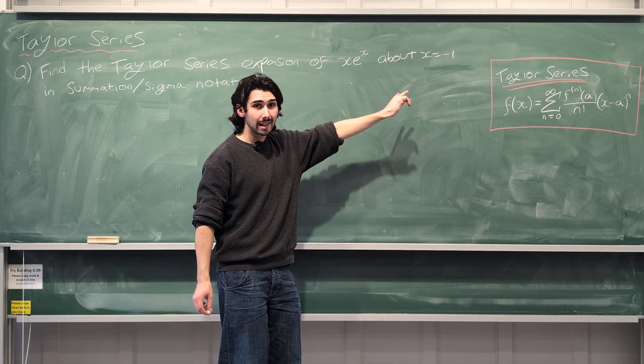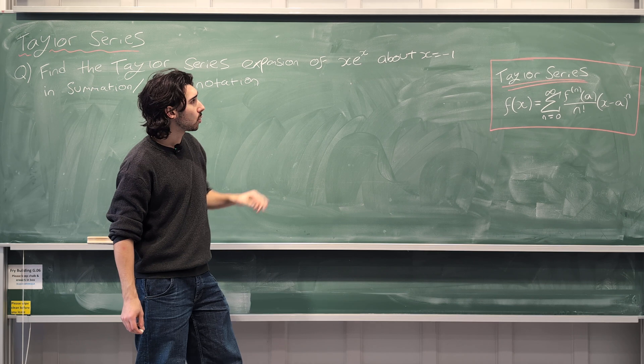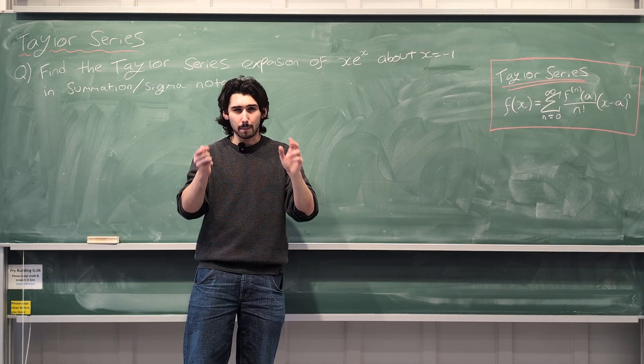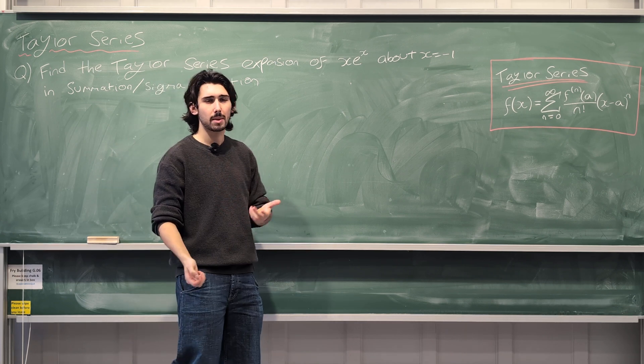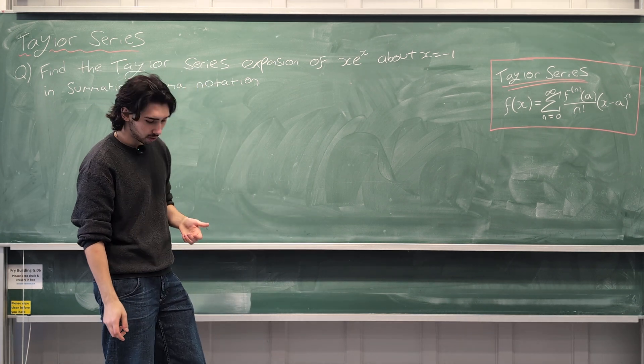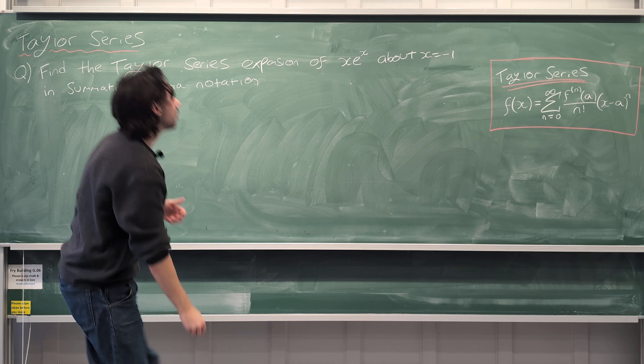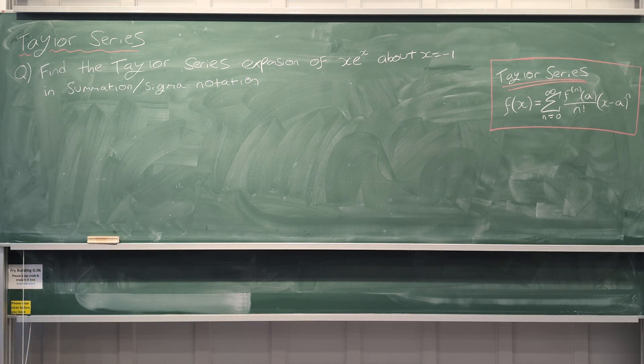When it says about x equals minus 1, this is talking about basically where the function is the best, where it's the most accurate, where you need the least number of terms in order to approximate it. So let's have a look at getting started with this.